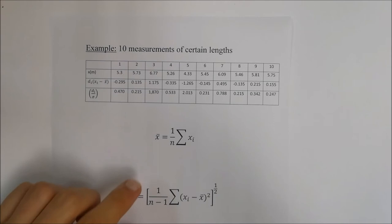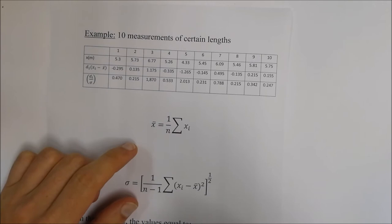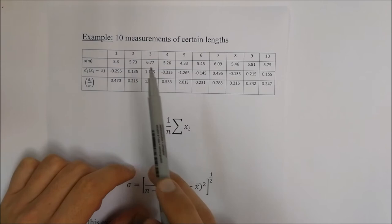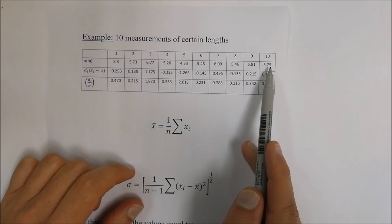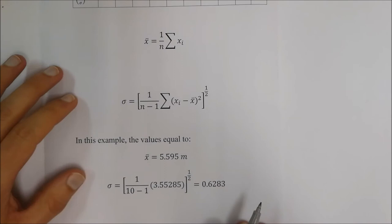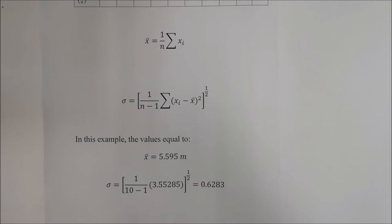You should be familiar with the mean calculation: it's 1 over n (the number of readings) multiplied by the sum of all the readings. So we add 5.3 plus 5.73 plus 6.77 plus 5.26 plus 4.33 and so on, divide by 10, and we get a mean value of 5.595 meters.